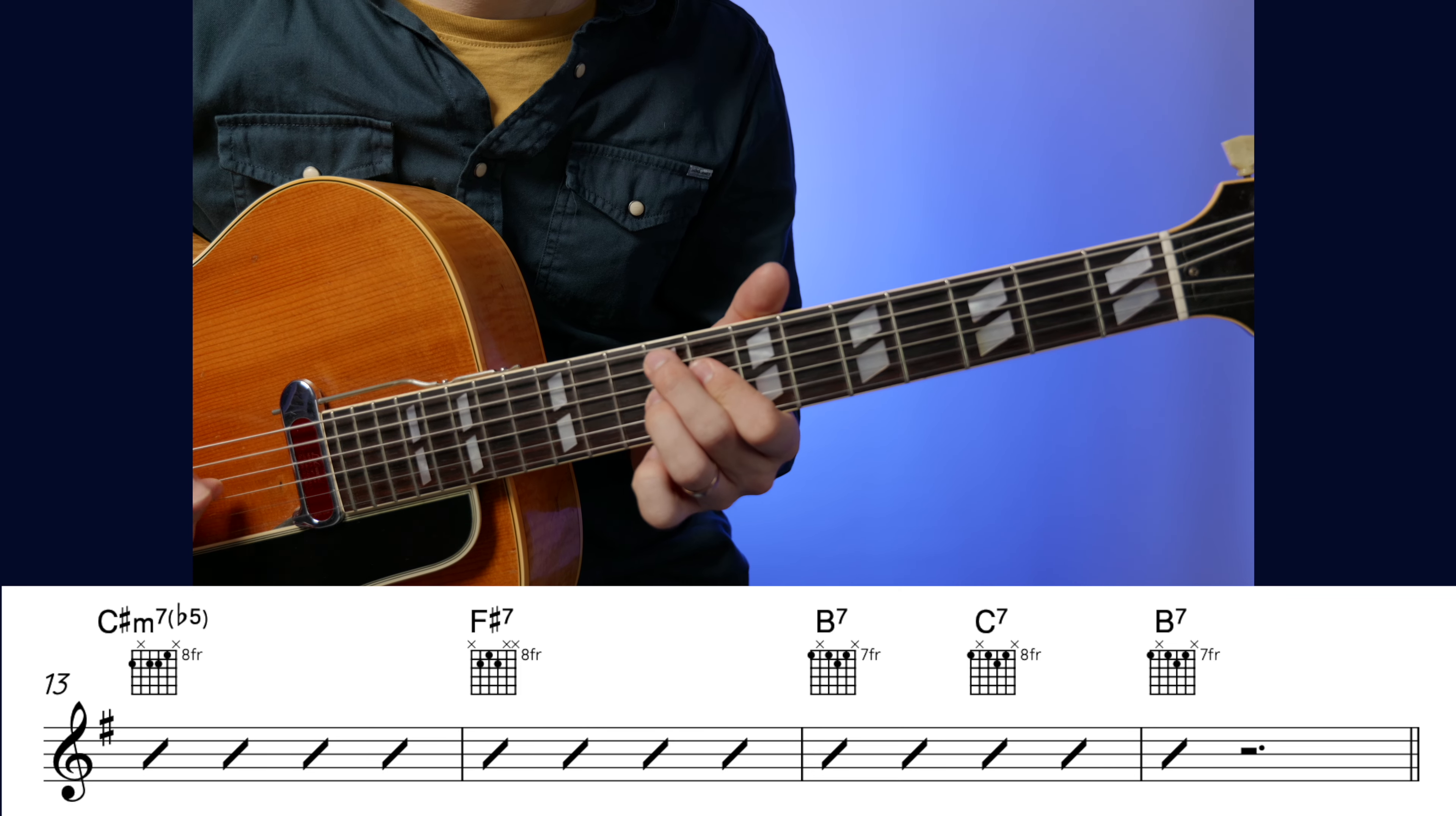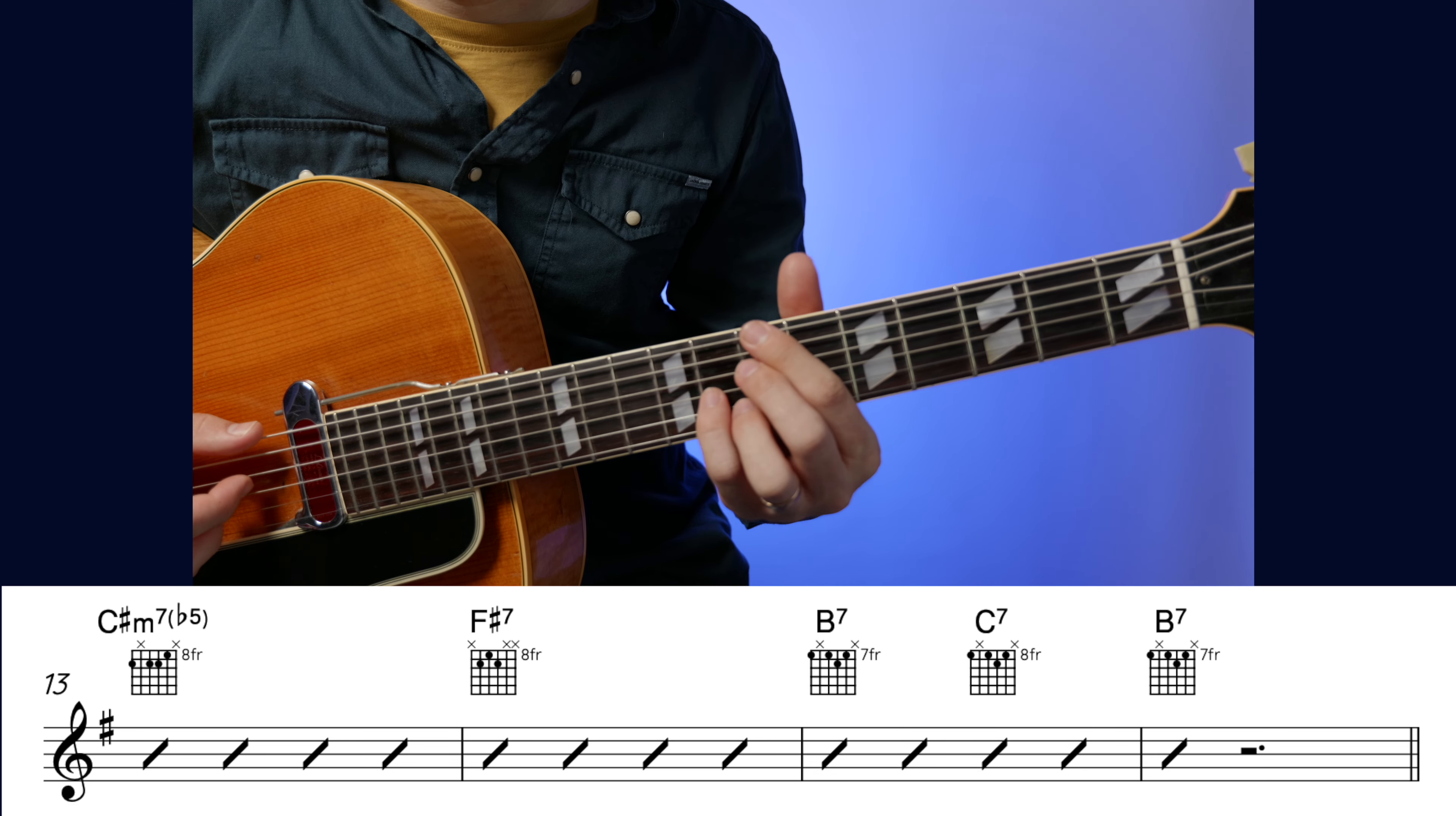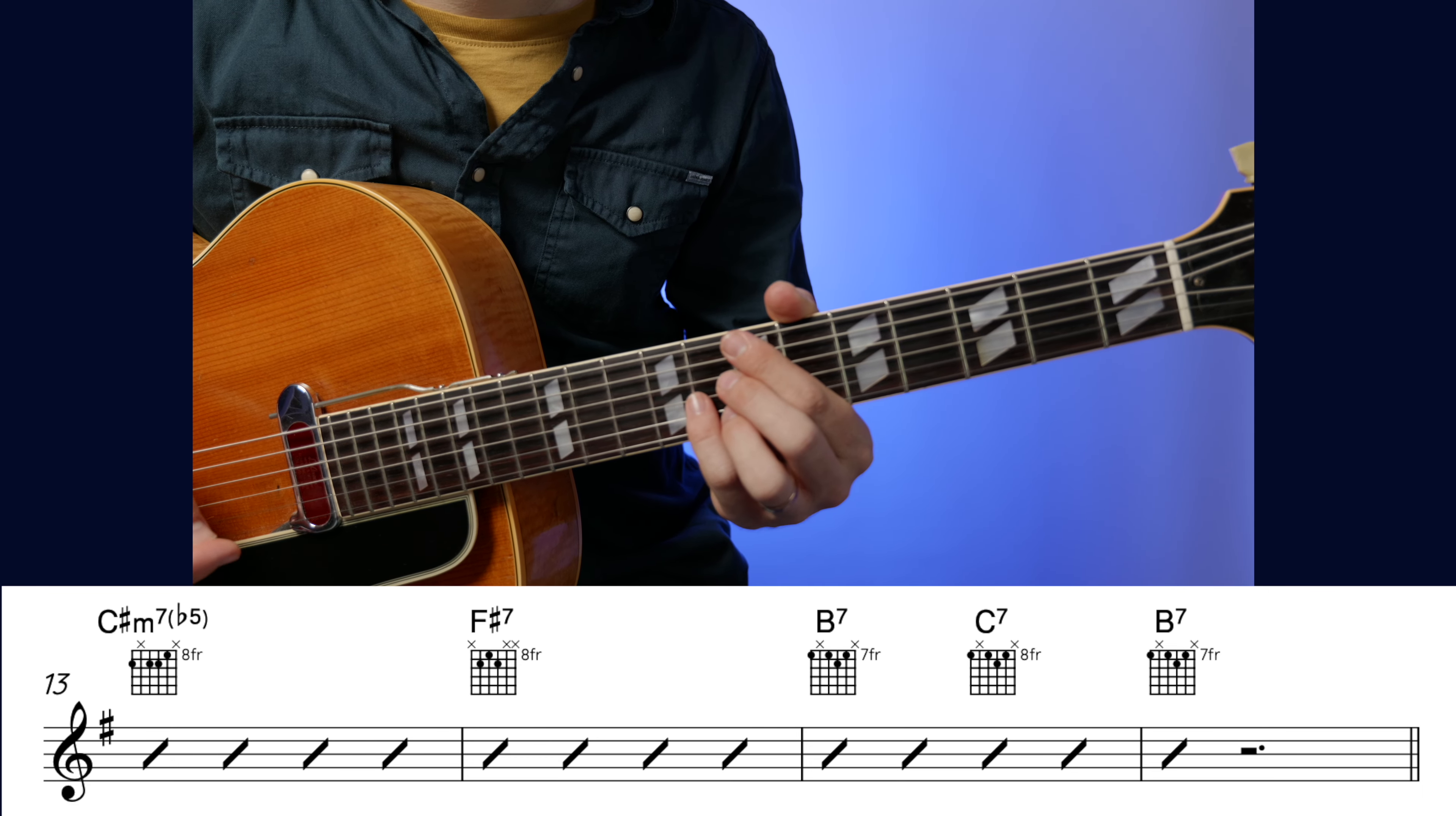Taking us to F sharp 7. And then people like to do quite a few different chords here. Some people like to do F sharp minor 7 to B7, bar of each. I like B7 to C7 and back. And in that bar it's quite common, particularly when playing the melody, to do a stop. So you go like... And then the melody would be played to like two, three, four. Then back in for the B section.